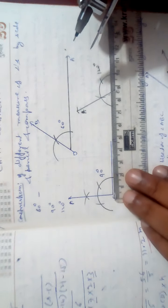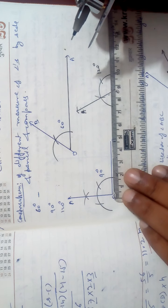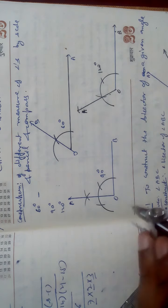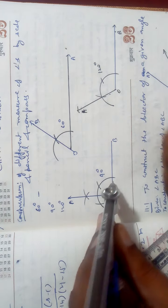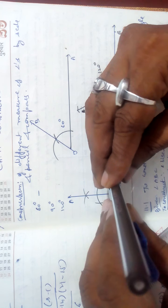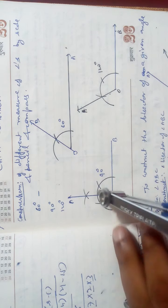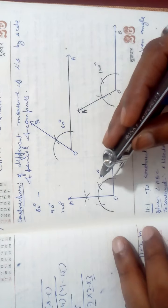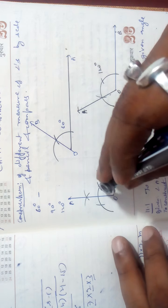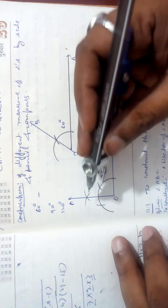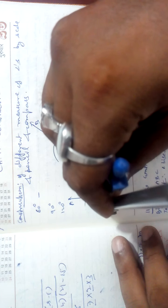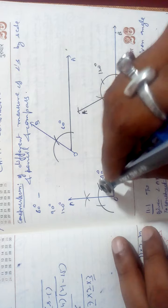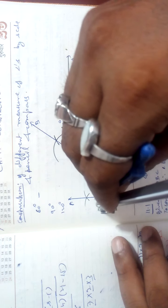First, draw a line. After drawing the line, take a compass, put it here, take any radius, and mark the first arc. With the same radius, mark the second arc, then the third arc.